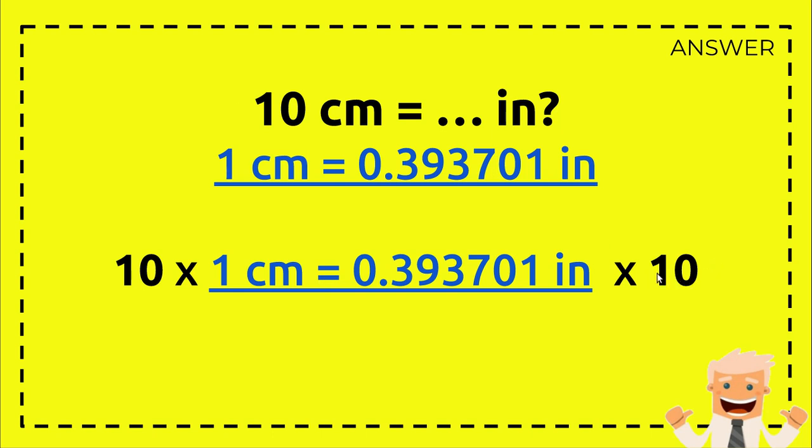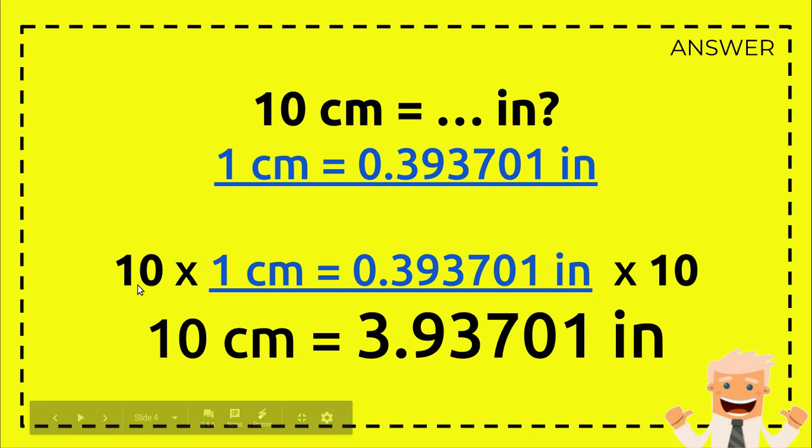And then you will have 10 centimeters equals, right, 10 times 1 equals 10, and 0.393701 times 10, just move the dot from here to here because we need to multiply by 10.